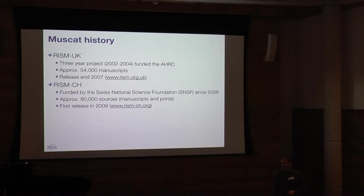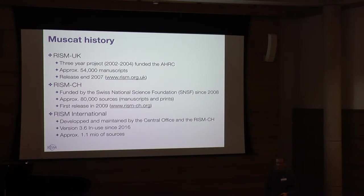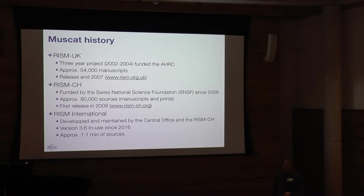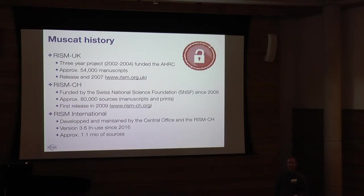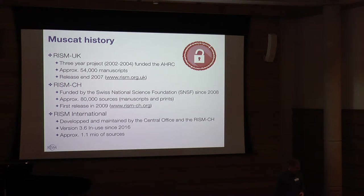It took quite some time and there were many political questions, but eventually the full community agreed that having this open source platform was the right option, and now the entire community uses Muscat for cataloging. Since last year — 2016 — we migrated about one million records, now running on a server in Berlin. What really happened is the data was unlocked, because before it was hidden in an obscure Oracle database that nobody could access. Now it's finally accessible and we can start doing interesting things with it.